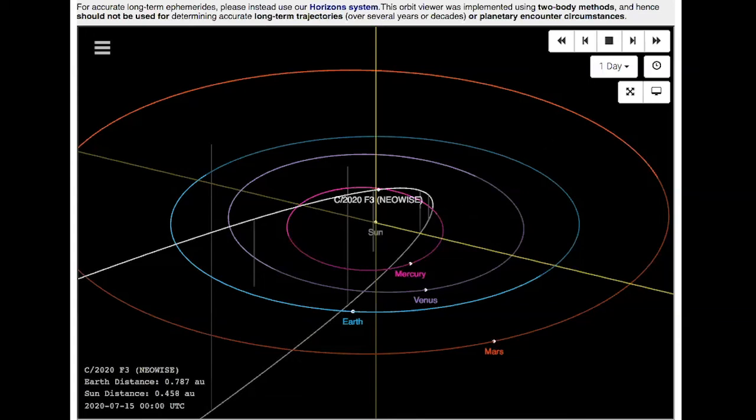I can actually give you a look at the comet's orbit as it's traveling through the solar system. So here we are, and now we can actually go back in time.